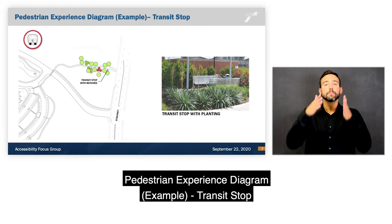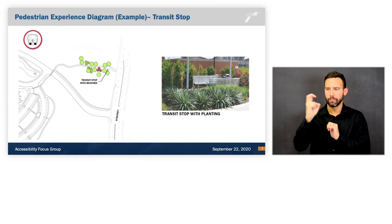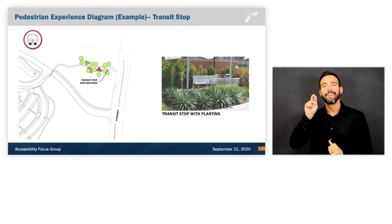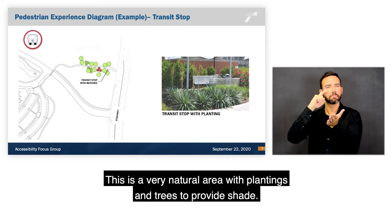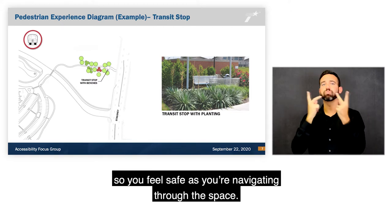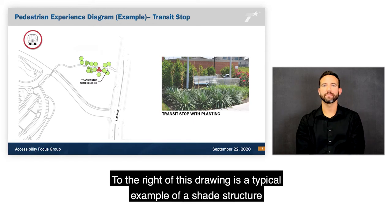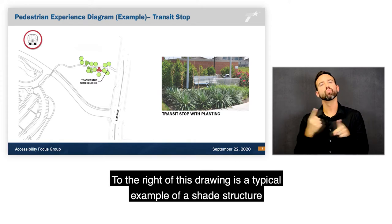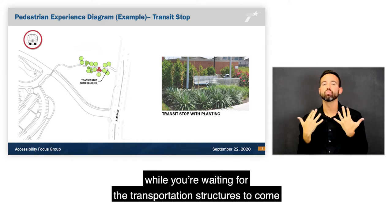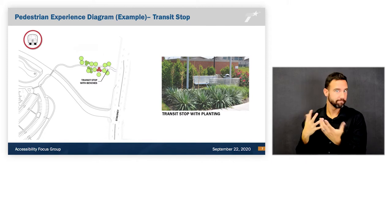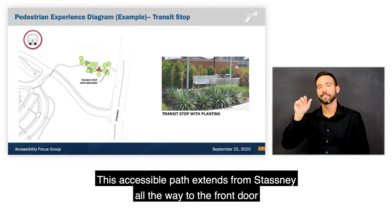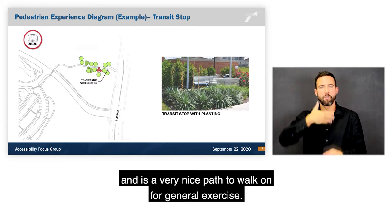The Pedestrian Experience Diagram for the transit stop shows the transit area to the west of Stastny Lane, a natural area with plantings and trees for shade. It is a comfortable area with good visibility for safety while navigating the space. To the right is a typical example of a shade structure with bench-type seating to stay out of direct sunlight while waiting for transportation. This accessible path extends from Stastny all the way to the front door and is suitable for general exercise.